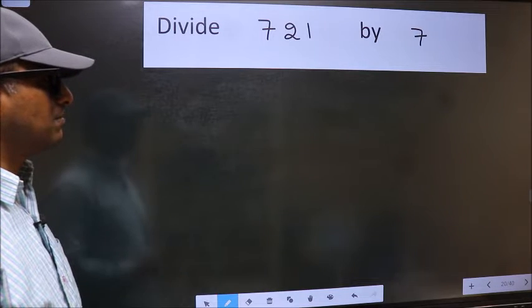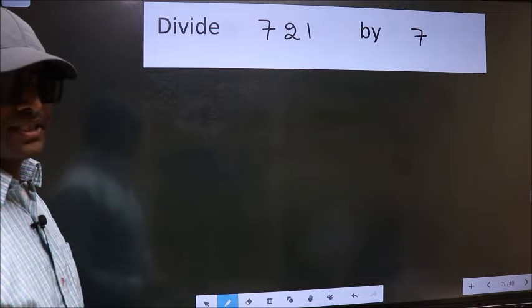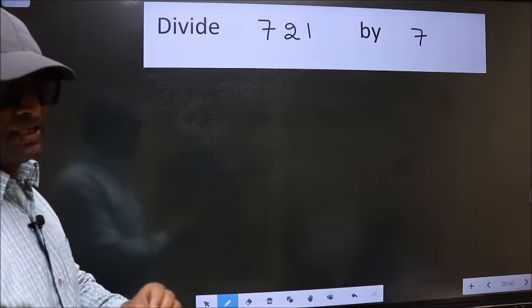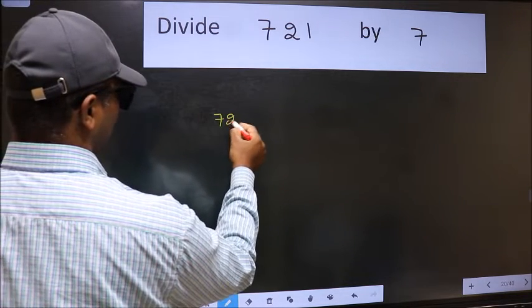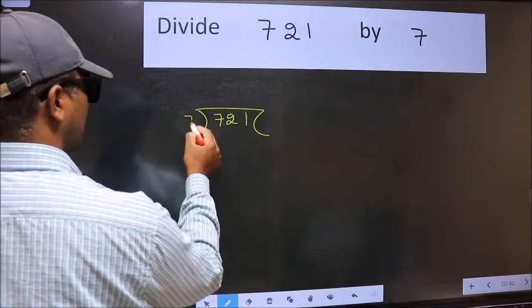Divide 721 by 7. To do this division, we should frame it in this way: 721 here and 7 here.